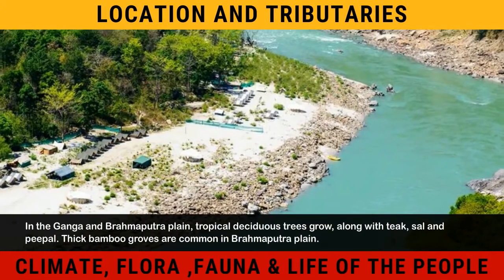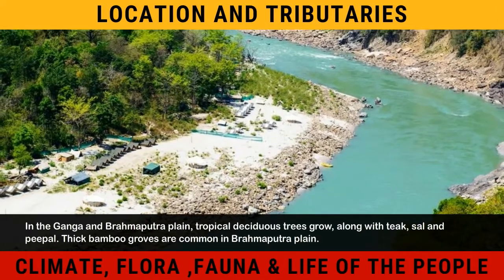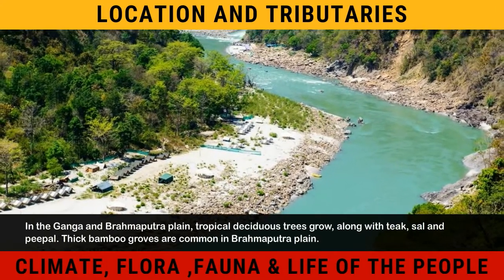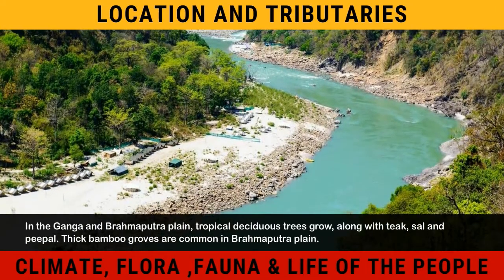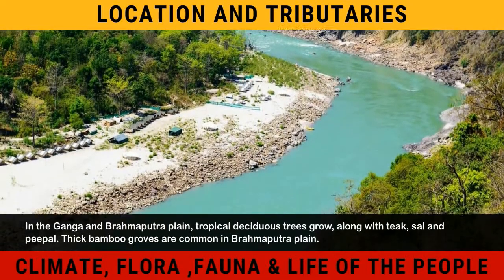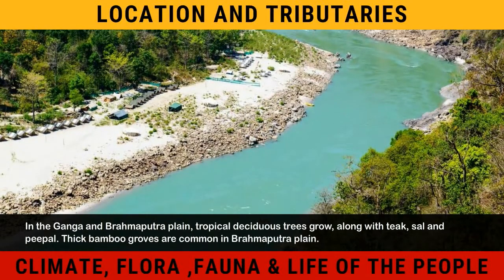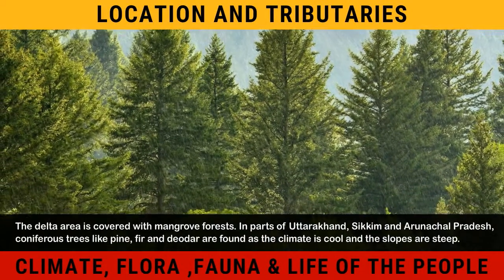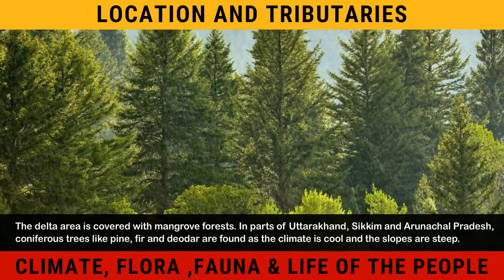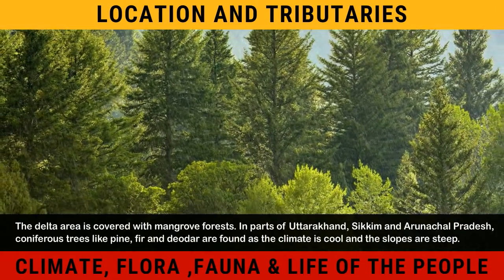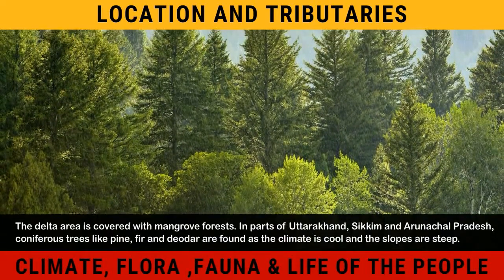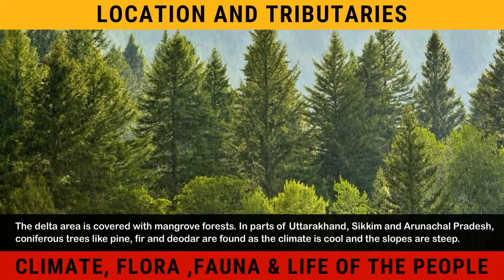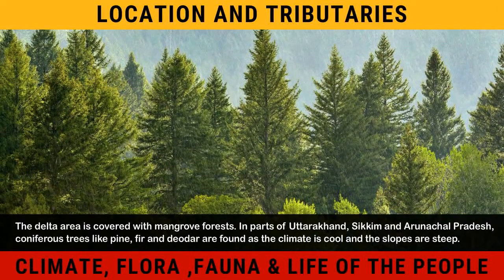In the Ganga and Brahmaputra Plain, tropical deciduous trees grow along with teak, sal and peepal. Thick bamboo groves are common in the Brahmaputra Plain. The delta area is covered with mangrove forests. In parts of Uttarakhand, Sikkim and Arunachal Pradesh, coniferous trees like pine, fir and deodar are found as the climate is cool and the slopes are steep.